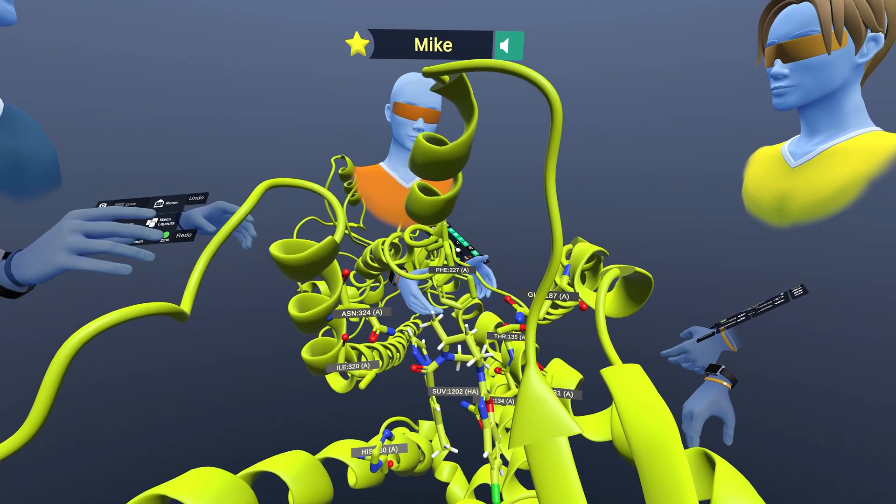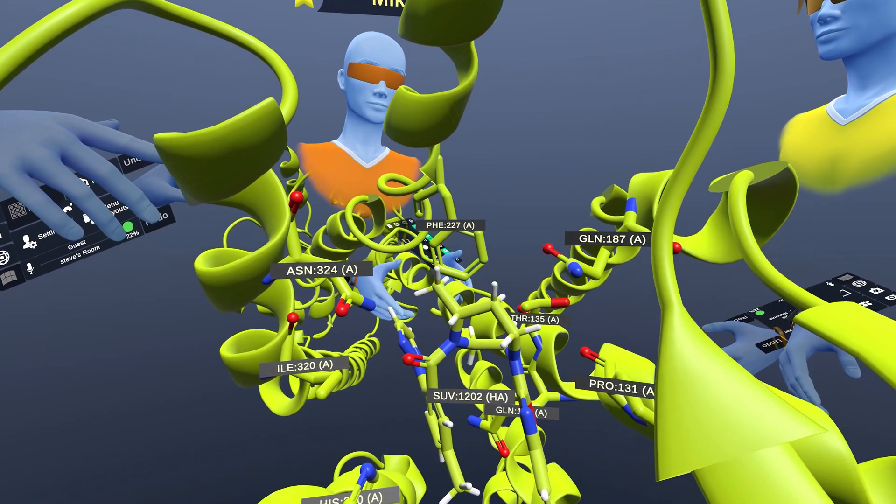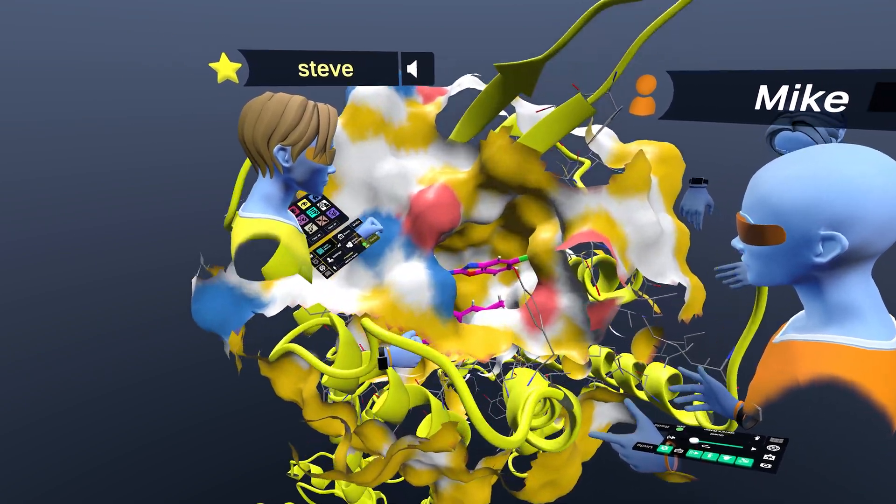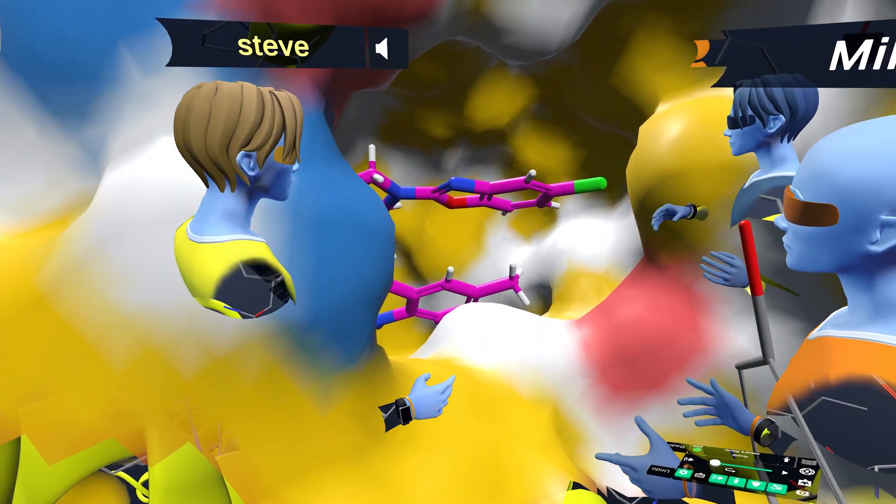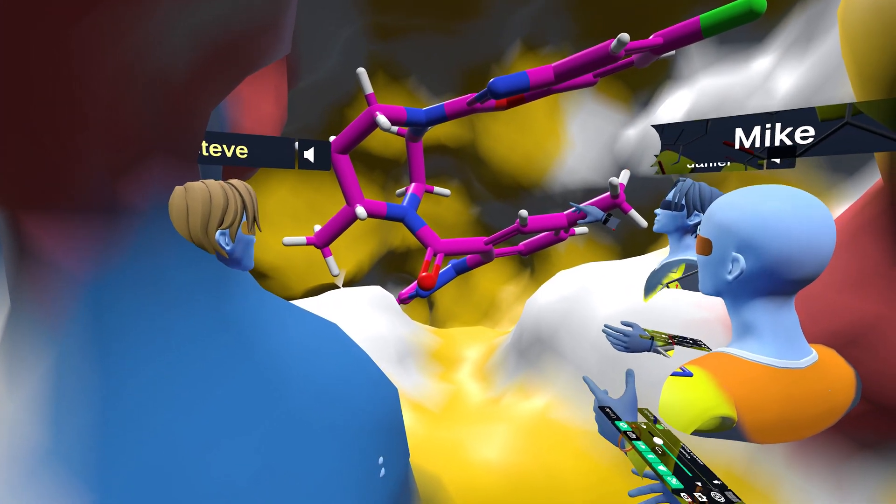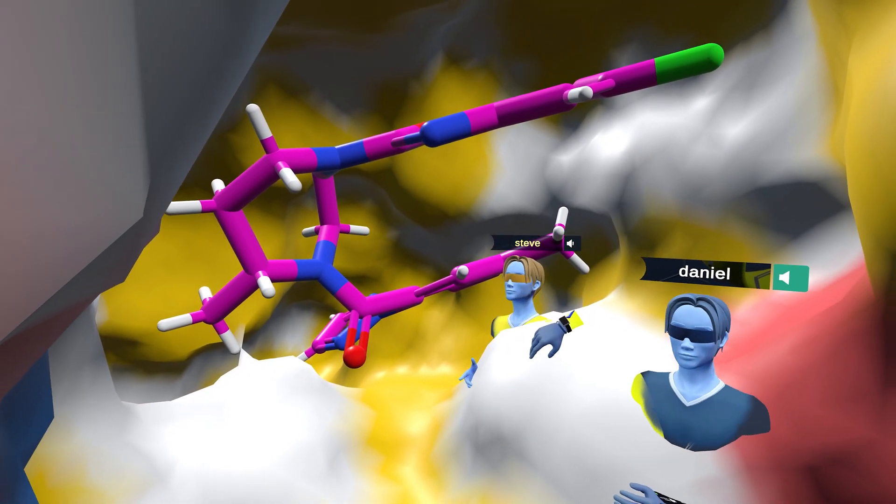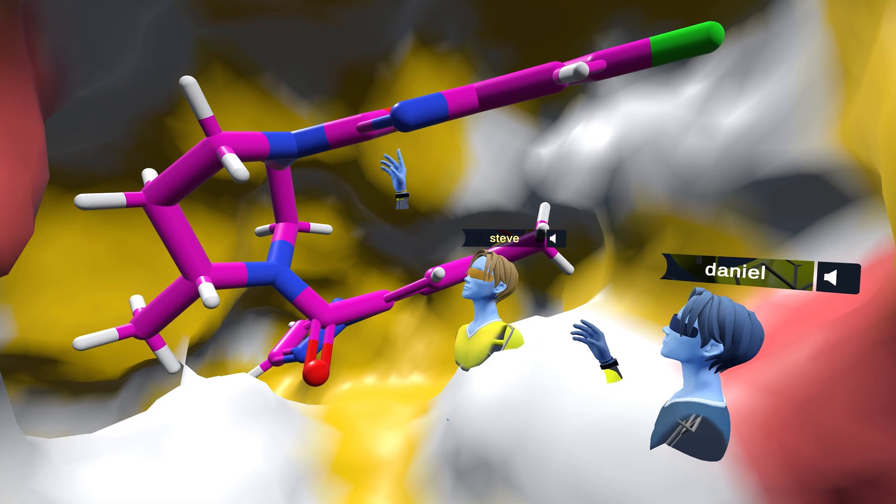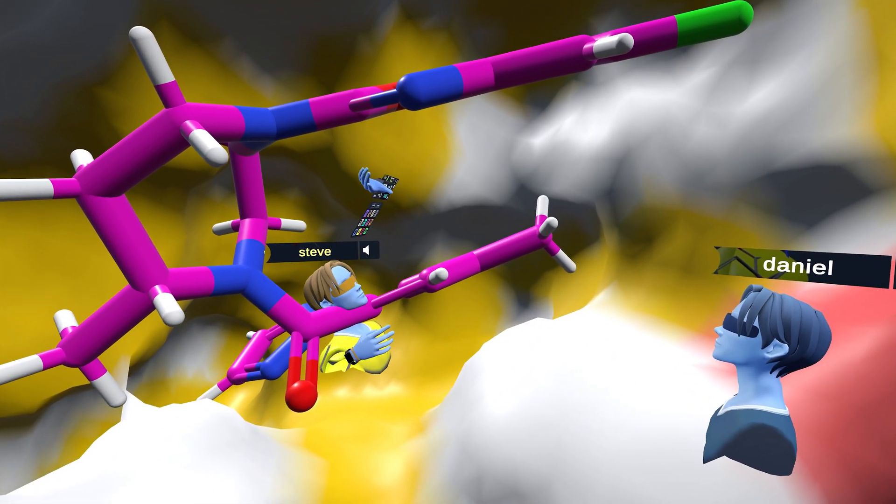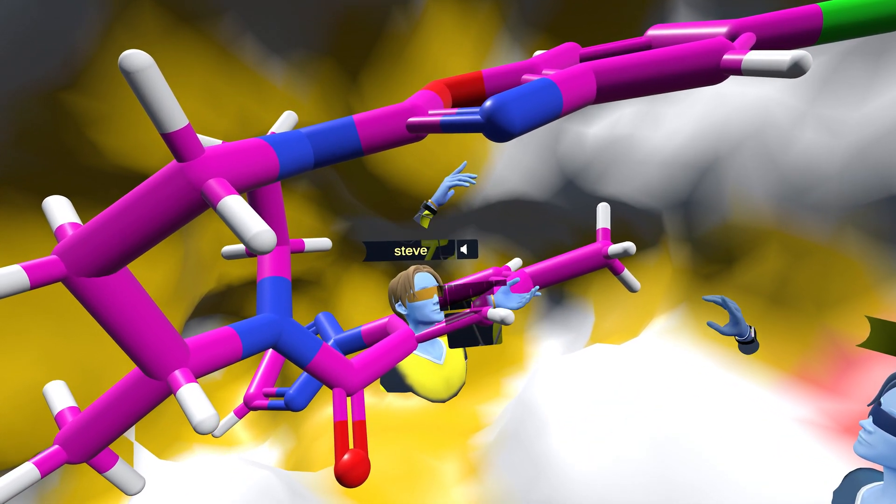Suvorexant is interesting because it binds well to both the orexin-1 receptor and the orexin-2 receptor. The great thing in nanom is you can grab the protein and make that binding pocket really large. And we can just come right inside the seven transmembrane region here and see the ligand. And so suvorexant has what's called a horseshoe shape, as Steve can show us. And it actually does pi stacking with itself, the two aromatic rings right above each other. So it fits nicely there.